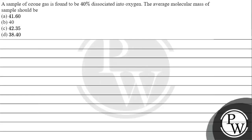Let's read this question. The question says a sample of ozone gas is found to be 40% dissociated into oxygen. The average molecular mass of the sample should be: option A, 41.60; option B, 40; option C, 42.35; option D, 38.40.